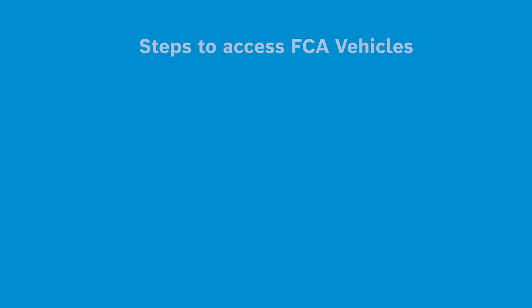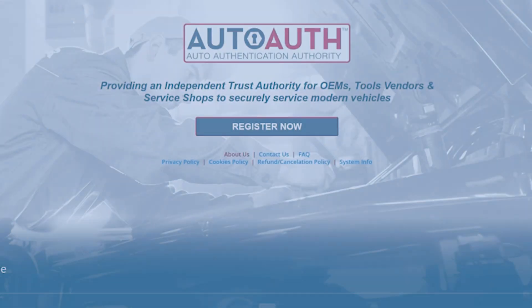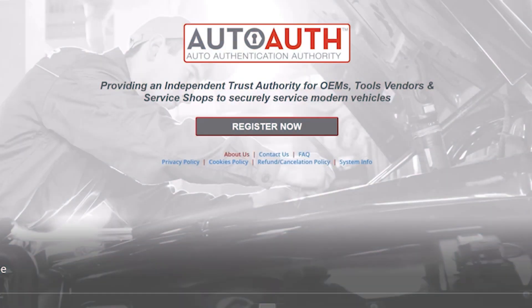There are two main steps to getting access to FCA secure vehicles. The first step requires you to set up your account with FCA on the AutoAuth website. The second is ensuring your ADS scan tool is updated to 4.0 or higher and connected to the internet. Let's get started with the AutoAuth account setup process.